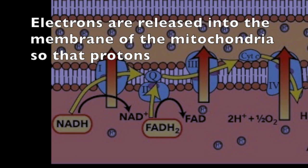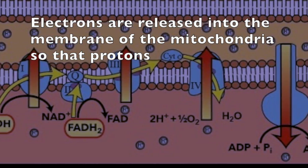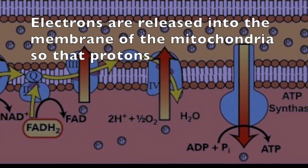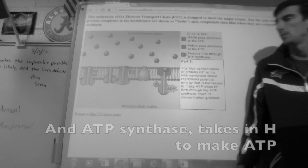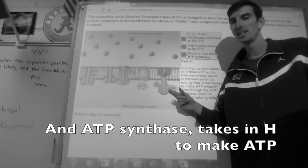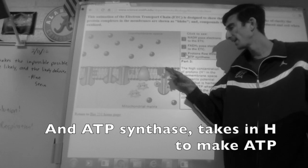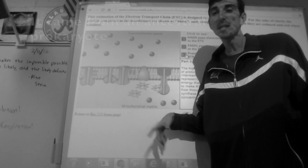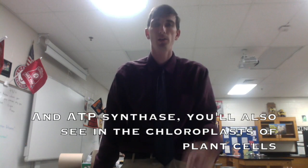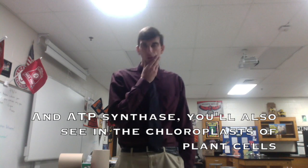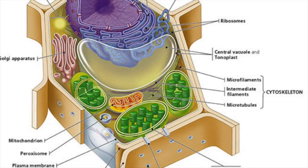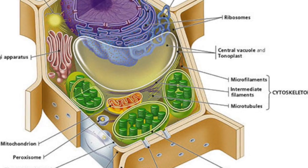Electrons are released into the membrane of the mitochondria, so that protons will create a gradient for chemiosmosis. An ATP synthase takes ADP to make ATP. It came from an ancestral prokaryote. An ATP synthase you'll also see inside the chloroplast of plant cells.